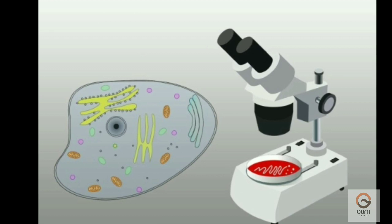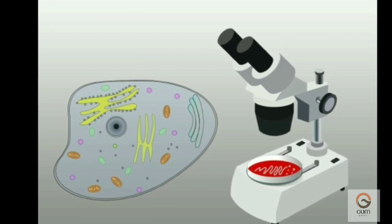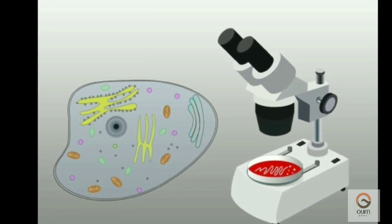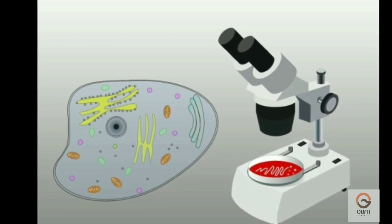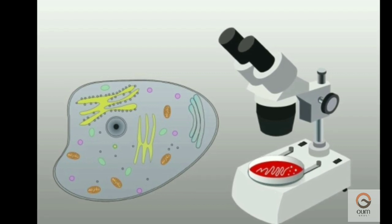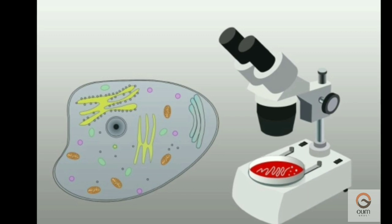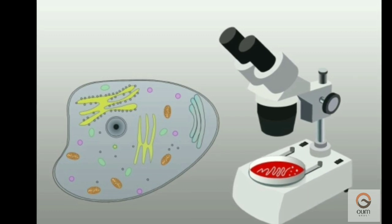Third one is the objective lens. The objectives are the parts at the bottom of the body tube closest to the sample we are examining. Each objective has a lens.